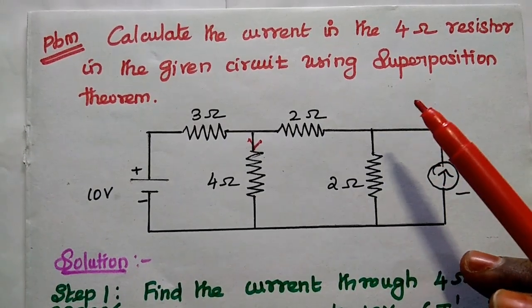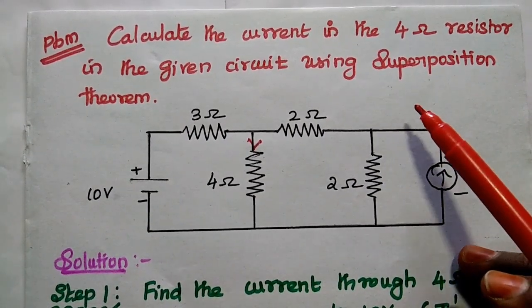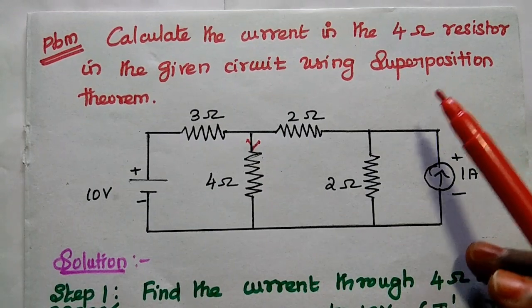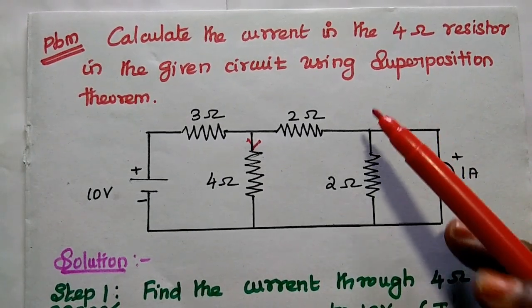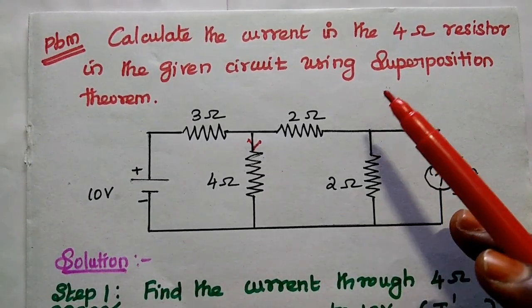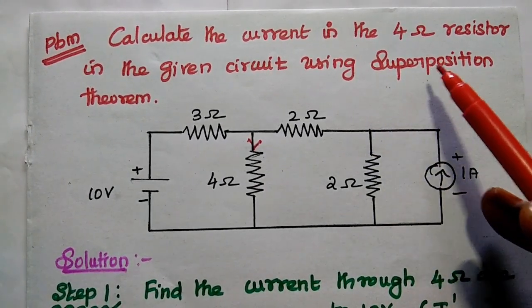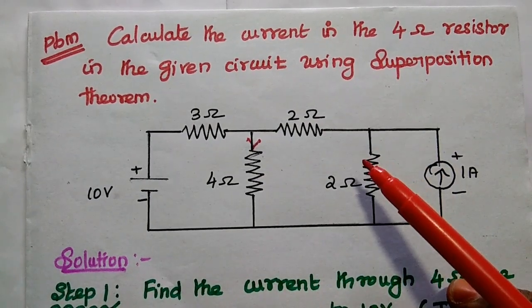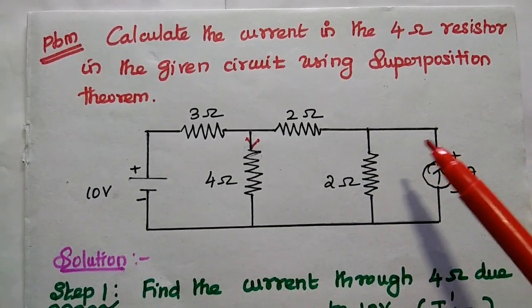Dear students, now we are going to solve one important problem in superposition theorem. Calculate the current flowing through the 4 ohm resistor in the given circuit using superposition theorem.